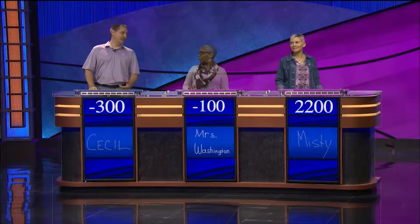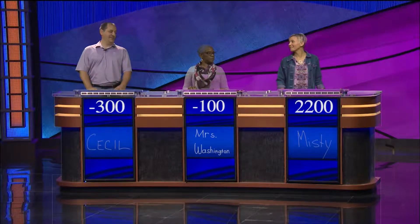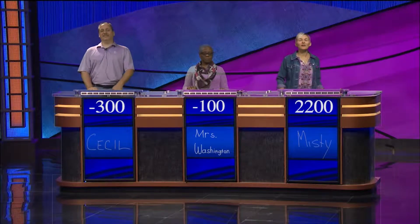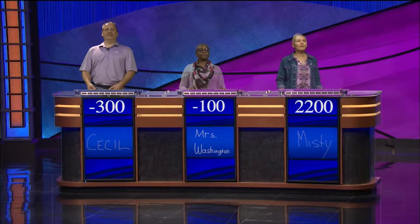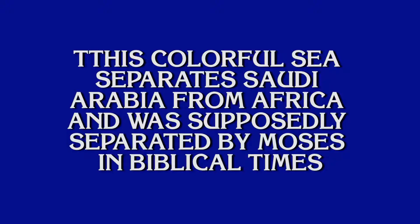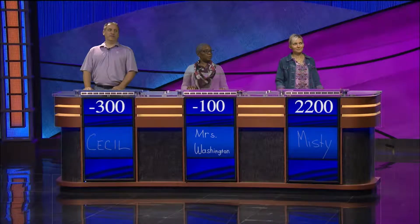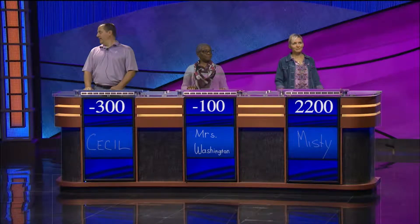I knew it began with a C. Miss D, you have the board. Geography for $300: This colorful C separates Saudi Arabia from Africa and was supposedly separated by Moses in biblical times. Miss Washington: What is the Red Sea? Correct.